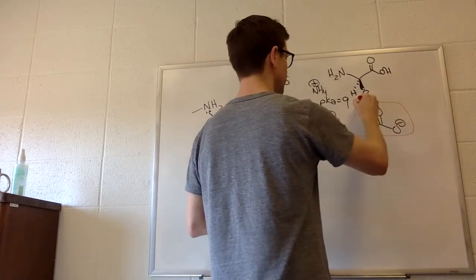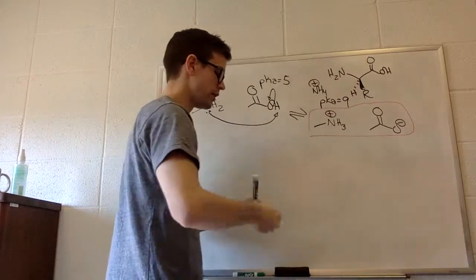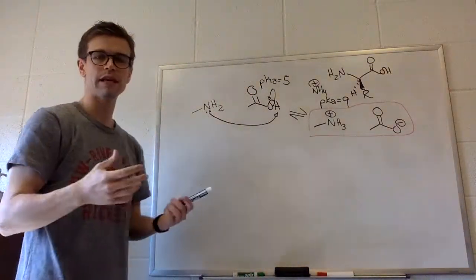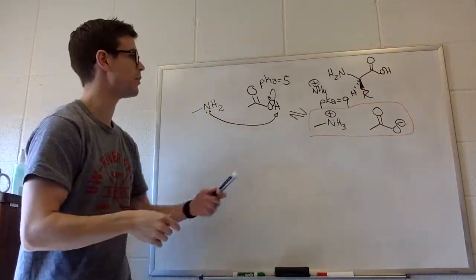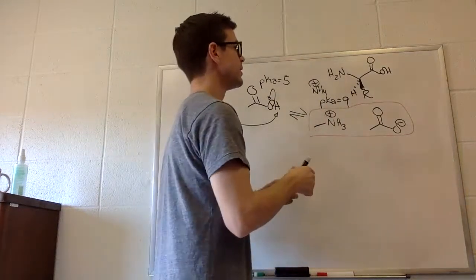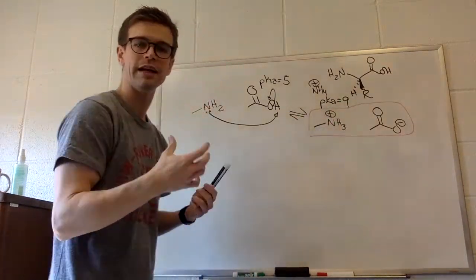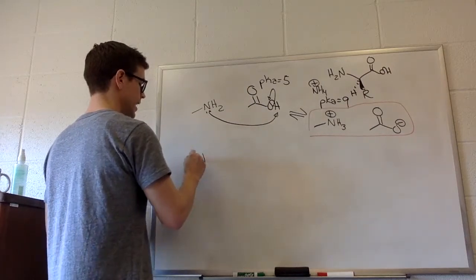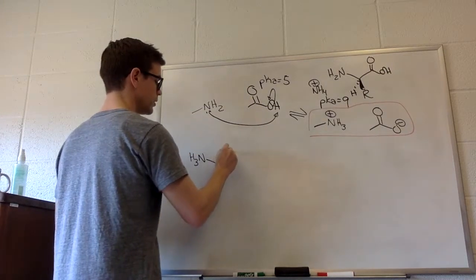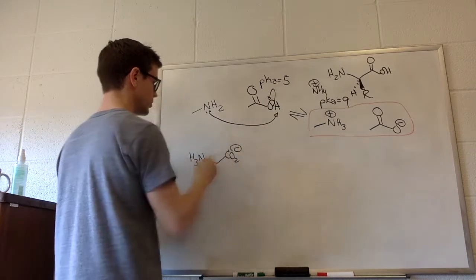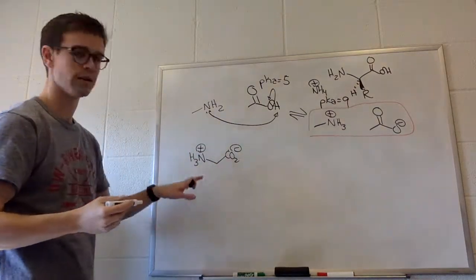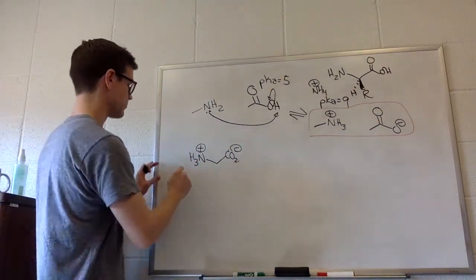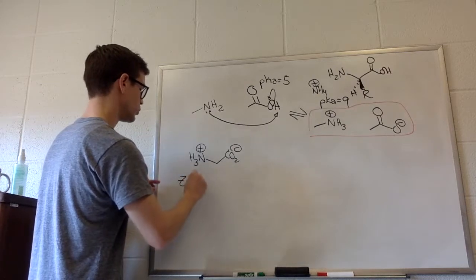So the equilibrium is over here. So what does that mean about amino acids? People often draw amino acids in their neutral form like this, but any time we have an amino acid, it's not going to be neutral. It's actually going to be charged, doubly charged. And there's actually a term for this type of molecule. It's called a zwitterion.